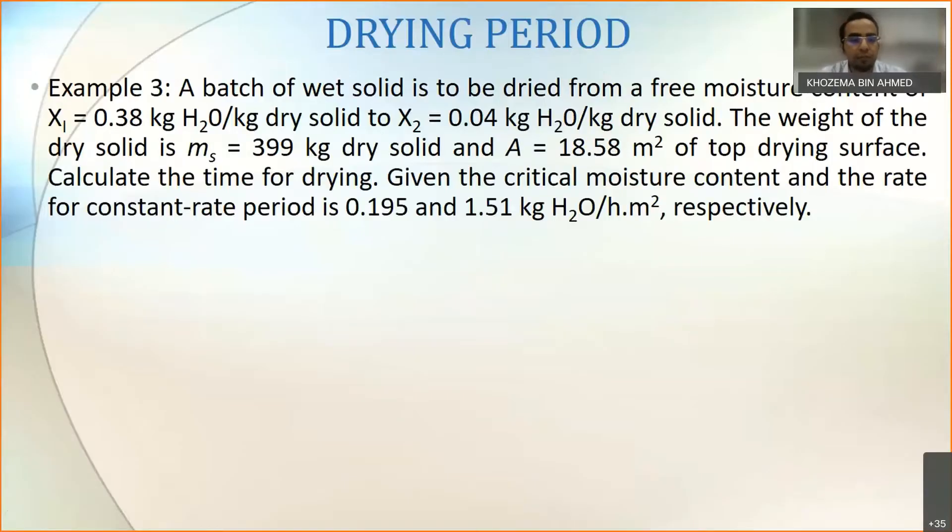X1 equal to 0.38 to X2 equal to 0.04 kg H2O per kg dry solid. The weight of the dry solid is ms equal to 399 and the area of drying is 18.58 meter squared on top drying surface. Calculate the time of drying.